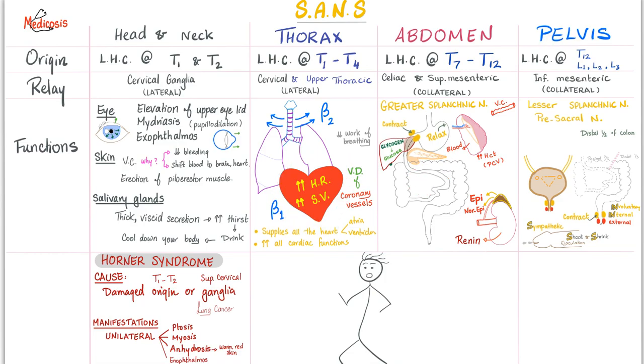Pelvis. Sympathetic. Origin. Lateral horn cell. Where. T12 and L1, L2, and L3. Relay. Inferior mesenteric ganglia. This is collateral. This is prevertebral. Functions. Through the lesser splanchnic nerve and presacral nerve. The distal half of the colon from here. You see this is proximal. Two thirds. This is greater splanchnic. The distal one third of the transverse colon. And then the descending sigmoid rectum etc. This is lesser splanchnic nerve. This is pelvis.